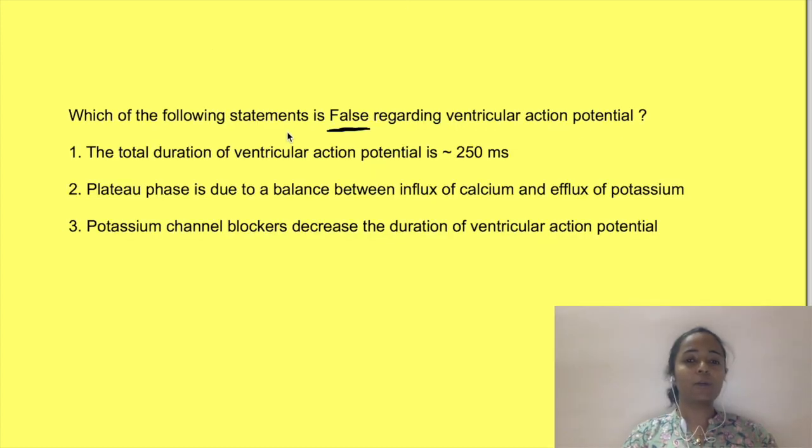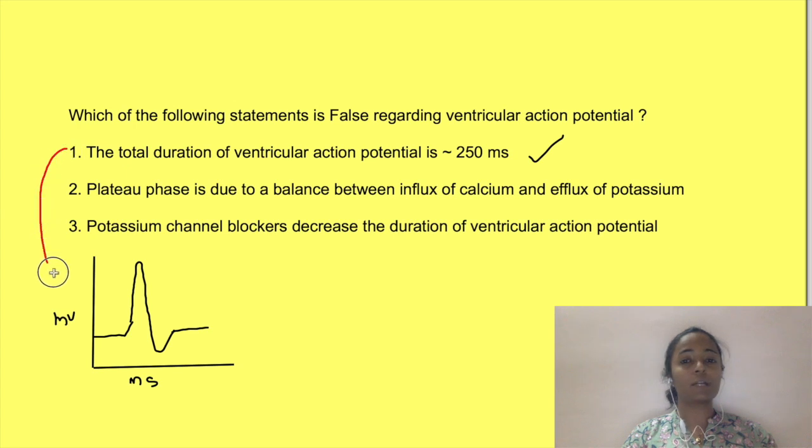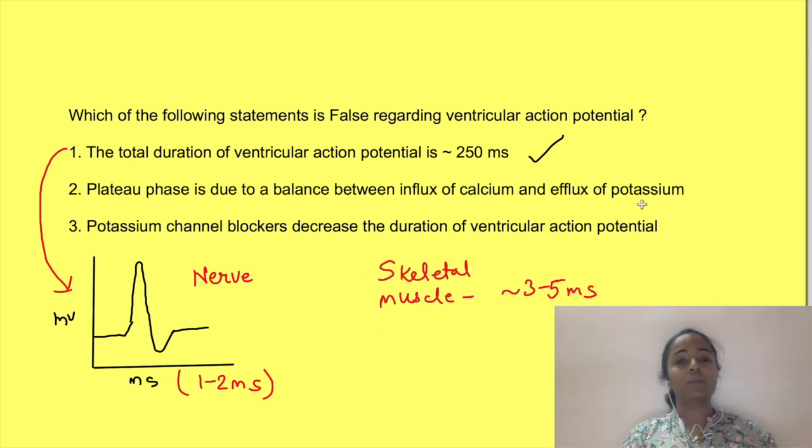Now let's come back to our original question. So question was which of the following statements is false regarding ventricular action potential? Yeah point 1 is correct. Total duration of ventricular action potential is approximately 250 milliseconds. This occurs because of the plateau phase. Now this is in contrast to nerve action potential which is only about 1 to 2 milliseconds in duration and skeletal muscle action potential which is around 3 to 5 milliseconds in duration. Point 2 is also correct as we have already seen in the video.